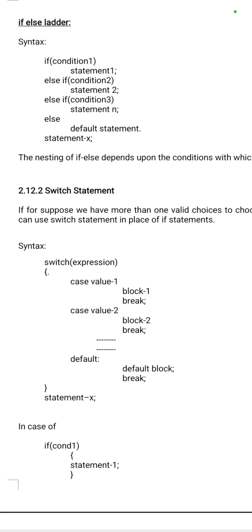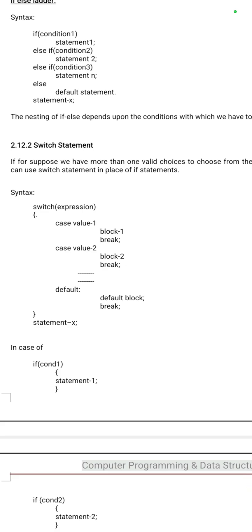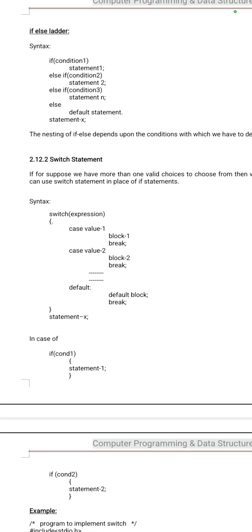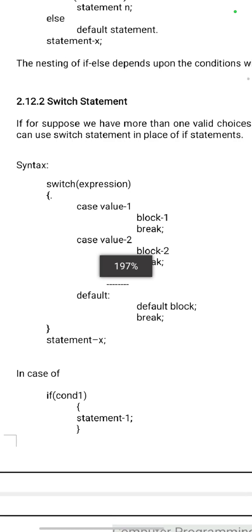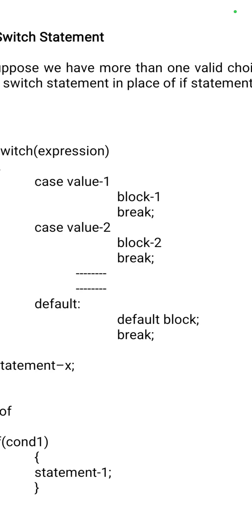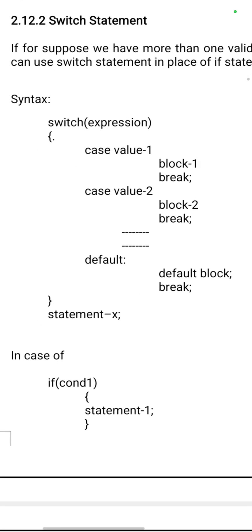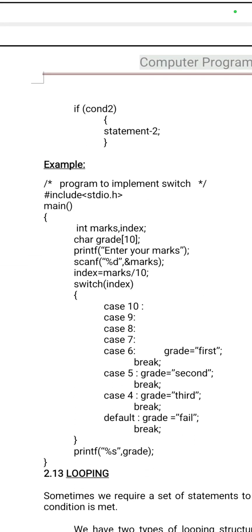Switch statement is called a multi-conditional or multi-way decision-making statement. When the number of choices is more, we can select any one option. Syntax: switch expression with case value 1, case value 2, case value 3. Each case must end with break — once a case is finished, break exits and returns after switch. If no cases match, we go for default, which is optional.